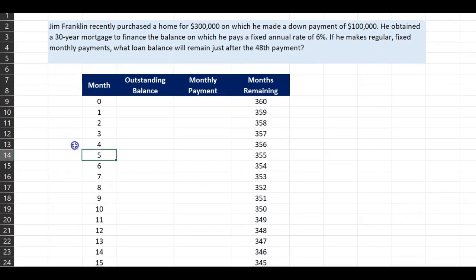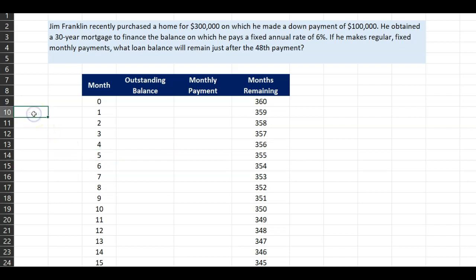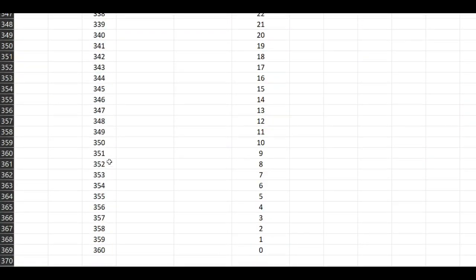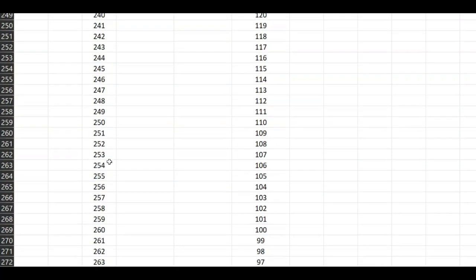To help you understand this question, I've drawn a table. The first column shows the month. Because it's a 30-year mortgage, you're going to be making payments over 360 months — 30 years, each year has 12 months, so 30 times 12 equals 360. This column goes all the way down to 360 months.